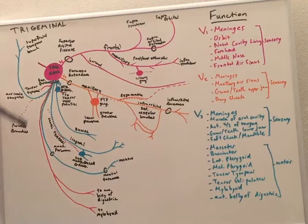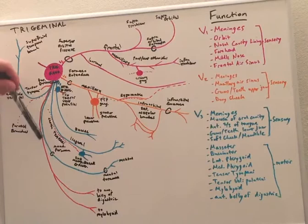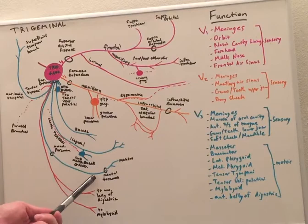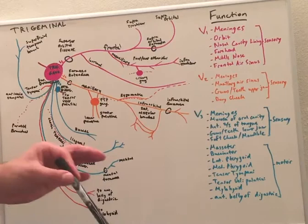Continuing on with the next branch we have the mental branch which goes through the mandibular foramen and continues on out of the mental foramen where it becomes the mental nerve and provides sensory cutaneous sensation to the chin area.